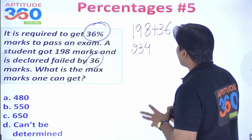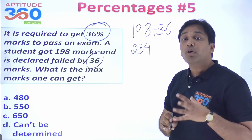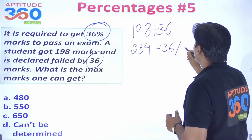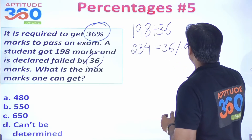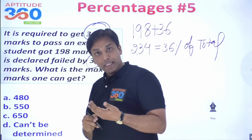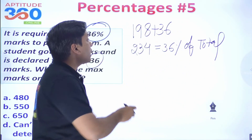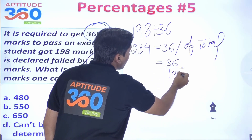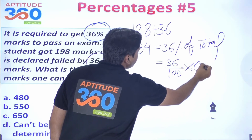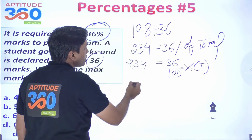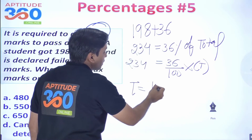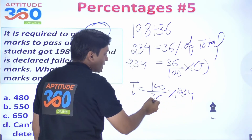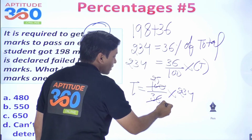234 is the passing mark, which equals 36% of the total marks. So: (36/100) × total = 234. Total = (100/36) × 234. Simplifying 36/100 → 9/25. Total = (25/9) × 234 = 25 × 26 = 650.